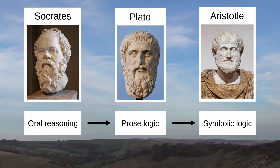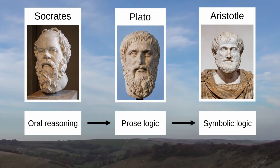Socrates did not write any texts. Plato wrote many texts, especially about Socrates' method of using a questioning and answering dialogue to explore and expose the logical consequences or contradictions of someone's thinking. But it was Aristotle who first used symbolic notation to rigorously catalogue a series of logical argumentation rules called syllogisms or deductions.